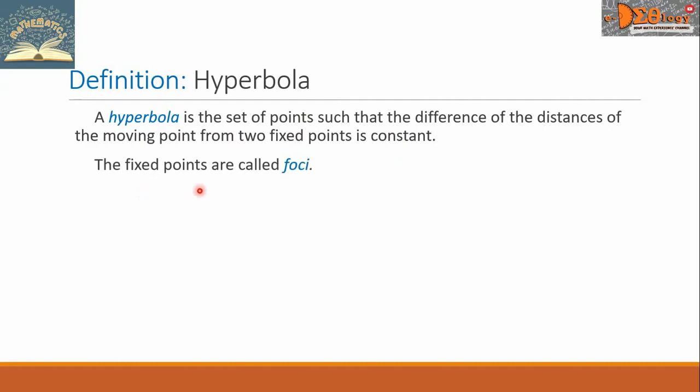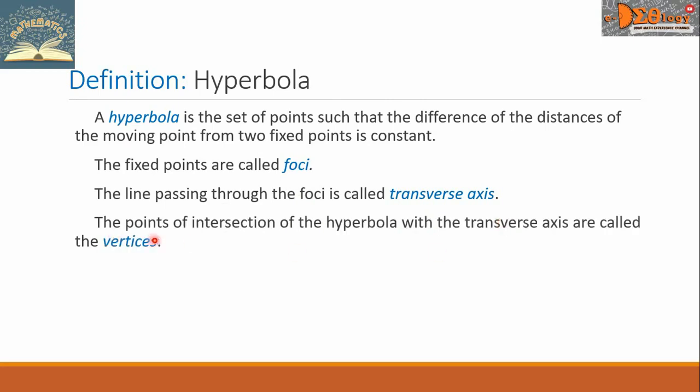The fixed points are called foci. The line passing through the foci is called transverse axis. The points of intersection of the hyperbola with the transverse axis are called the vertices. The center is the midpoint of the segment connecting the foci.